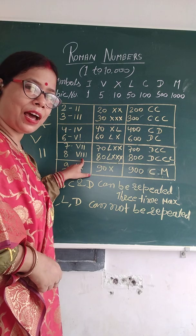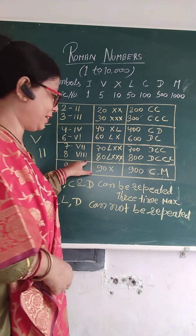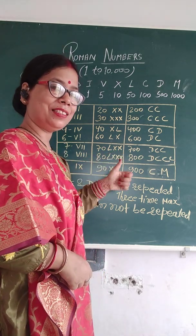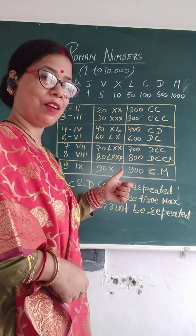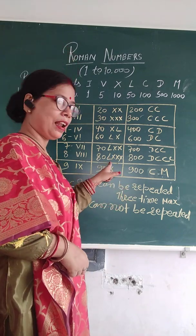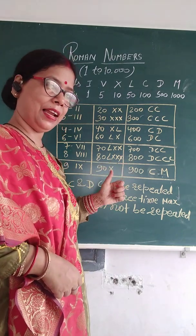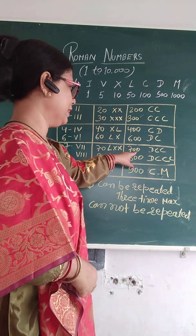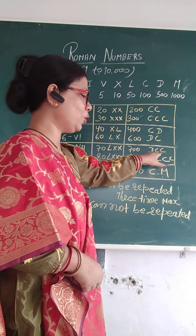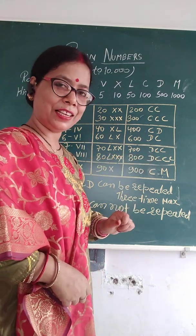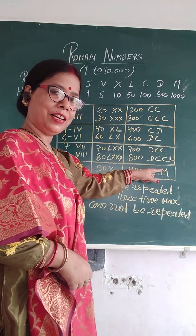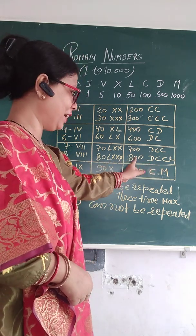V and 3 times I gives VIII — that's 8. L, XX gives 70 — L for 50 and 10 plus 10. L and 3 times X gives LXXX — that's 80. For 700: D for 500 and 2 times C is DC for 700. Wait — D for 500 and 3 times C is DCCC for 800.